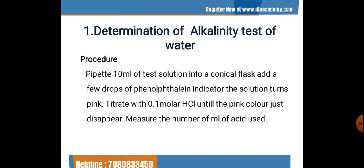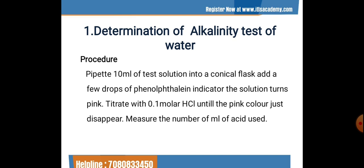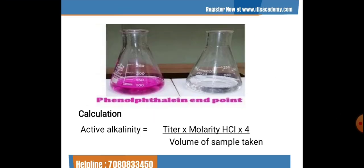We need to prepare a 0.1 molar HCl solution and the phenolphthalein indicator beforehand. The solution preparation techniques have been discussed in the previous lecture on solution preparation — go through that lecture to learn how to make 0.1 molar HCl or phenolphthalein indicator. Here is the calculating formula for the active alkalinity of water.